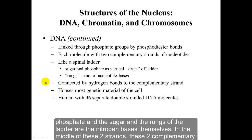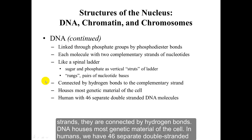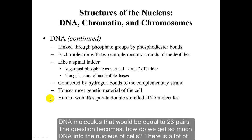In the middle, these two complementary strands are connected by hydrogen bonds. DNA houses most genetic material of the cell. In humans, we have 46 separate double-stranded DNA molecules — that would be 23 pairs.